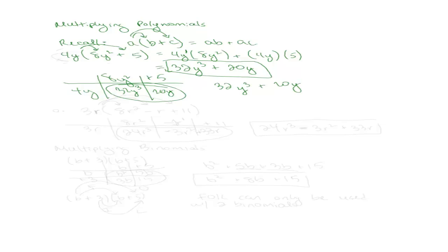Let's try one. So let's say we have 3r times 8r squared minus r plus 11. I can do this using the distributive property — I would just distribute this 3r to everything inside. But let me do it using the table. So using the table, I'm going to have 3r on one side, and 8r squared, negative r, and positive 11 on the other side.